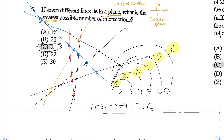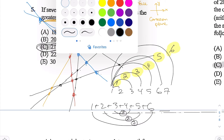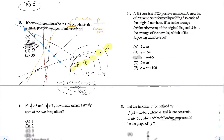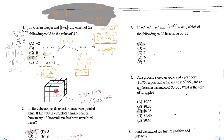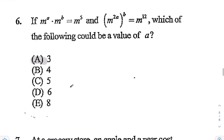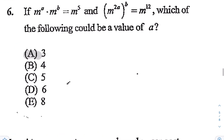To add these numbers quickly, pair them like a rainbow: you get 7, 7, 7 for a total of 21.